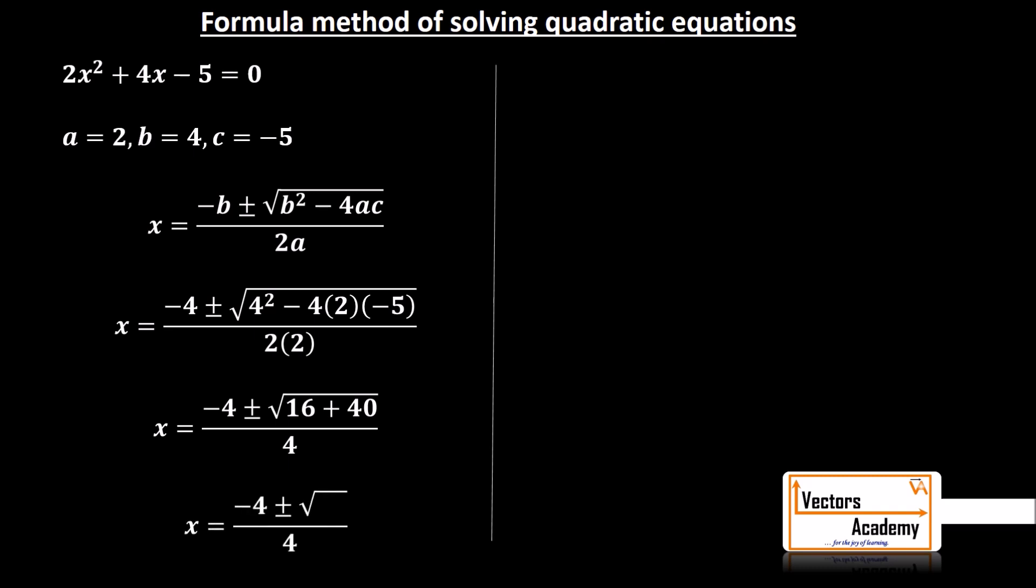Now, adding 16 and 40 will give you 56. Now, 56 can be converted. I can write 56 as 4 into 14. 4 can come out of the root and become 2.